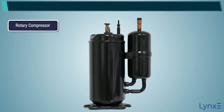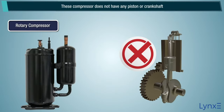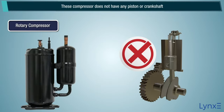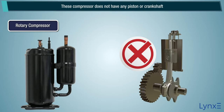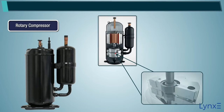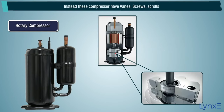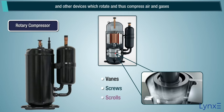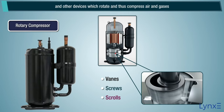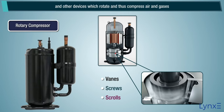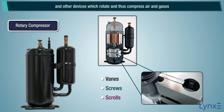Rotary Compressors do not have any piston or crankshaft. Instead, these compressors have vanes, screws, scrolls, and other devices which rotate and thus compress air and gases.